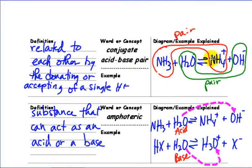Conjugate acid-base pairs, so pairing them up, they're related to each other by the donating or accepting of a single hydrogen. So NH3, NH4 plus, it gains an H, so those two are paired up. H2O, OH minus, this one.